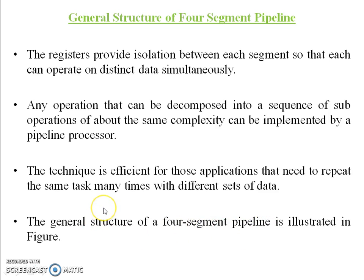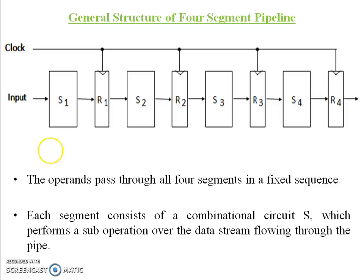I will show the basic structure of a four segment pipeline. First, input is stored in S1. S1 processes the data, and the processed data is stored in R1. R1 to S2, S2 processes the data and stores it in R2. When S2 processes the data, another input is stored in S1. This process continues up to R4. This is segment 1, segment 2, segment 3, and segment 4. It is called a four segment pipeline, the general structure.